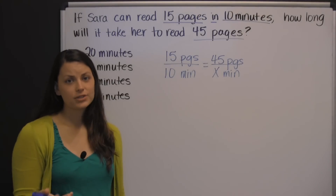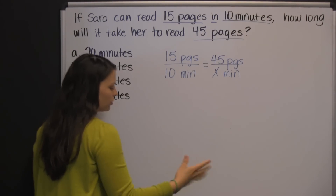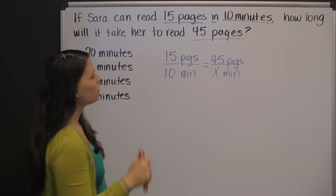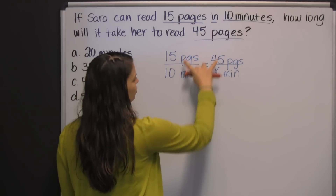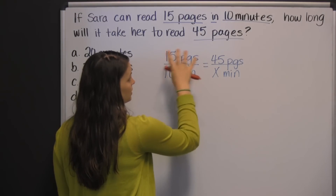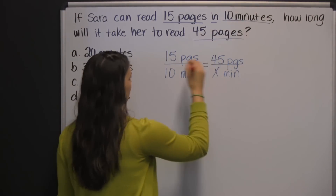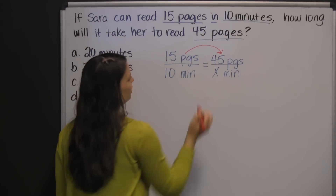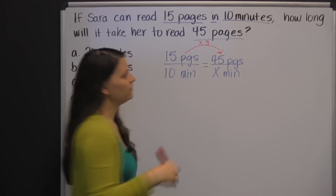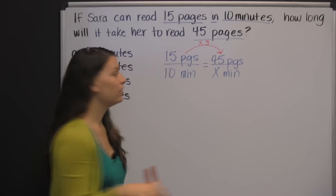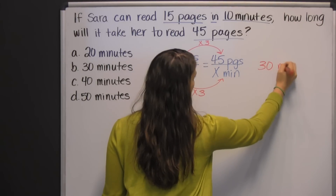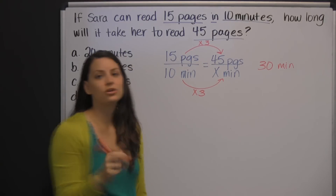There's more than one way to solve a proportion. One of the easier ways — though it won't always work — is to look at either your numerator or denominator and figure out what you'd have to do to get your other numerator. For example, what do you have to do to 15 pages to get 45 pages? Well, 15 times 3 is 45. So you just do the same thing in your denominator: 10 times 3 would be 30 minutes. So it's going to take 30 minutes to read those 45 pages.